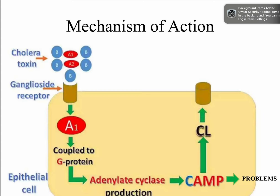Vibrio cholerae produces cholera toxin, also known as choleragen or heat-labile exotoxin. The toxin consists of two fractions, A1 and B5, and is responsible for severe diarrheal symptoms. Cholera is an acute diarrheal disease marked by rice watery stools. The disease has led to several pandemics and is particularly prevalent in regions like India and Bangladesh. This illustrates the mechanism by which the toxin acts on the human system to cause rice watery stools.